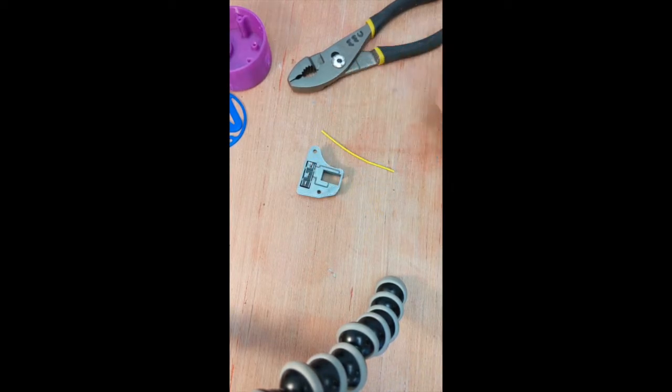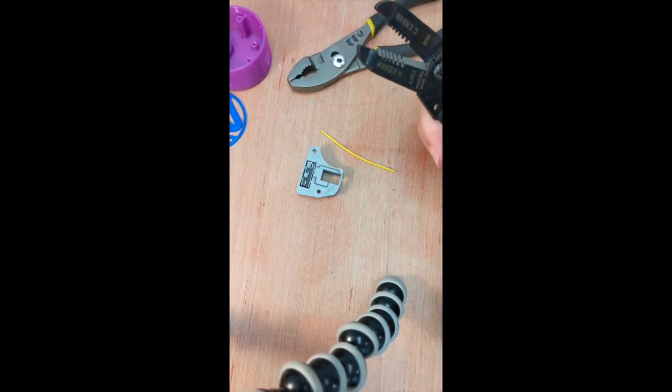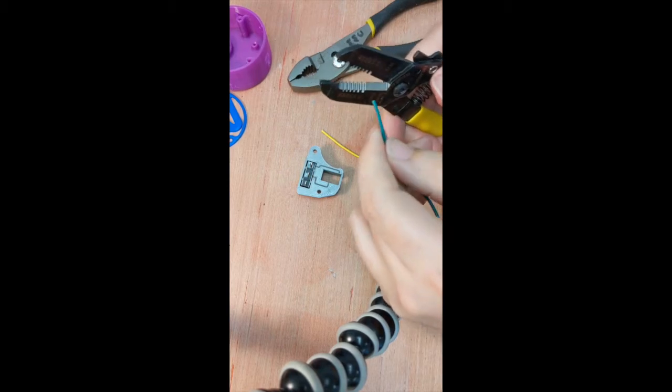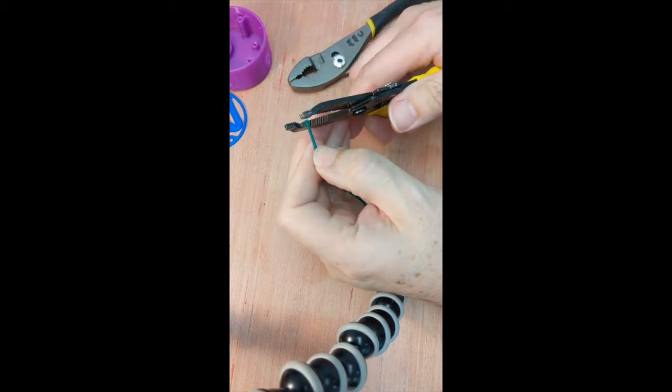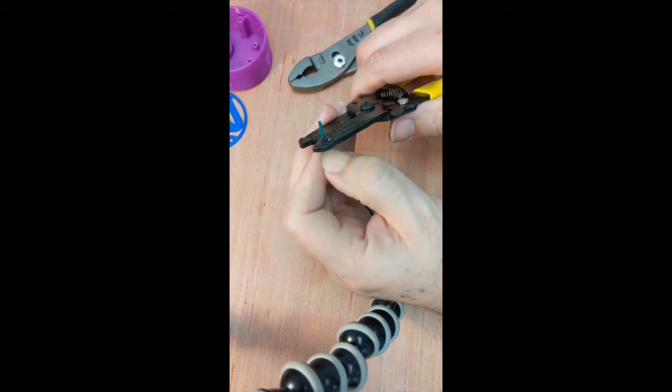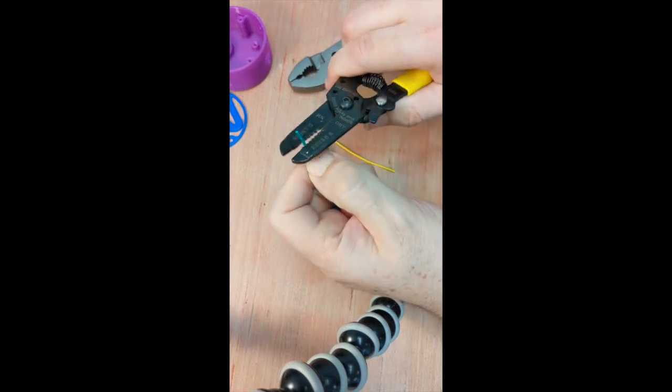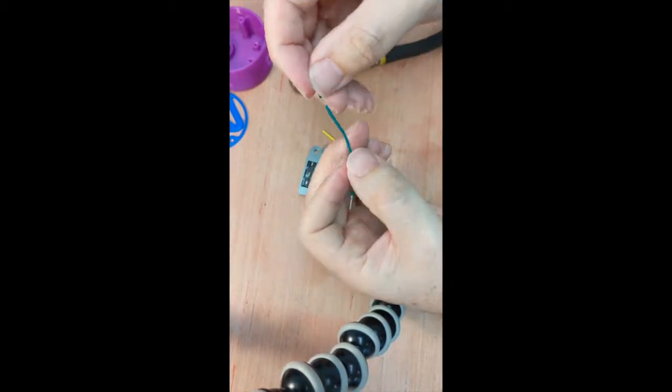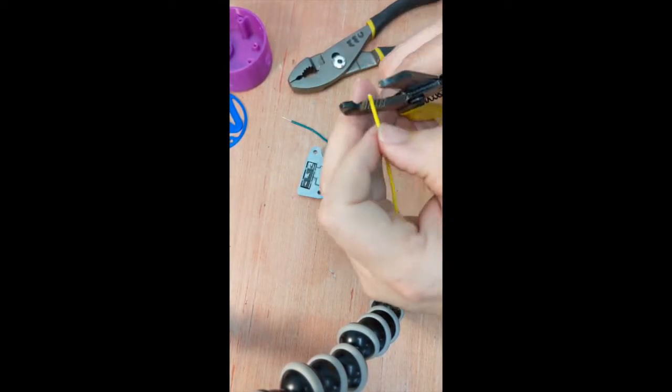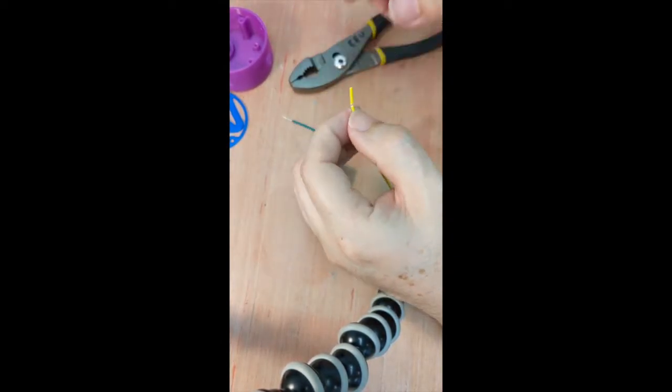Next, prepare two wires that are 6 cm long. Take your wire cutter, locate the 22 gauge hole and strip off half a centimeter of plastic from both ends. Wiggle your cutter back and forth and the plastic should come off easily. Remove the plastic and repeat with the second wire.